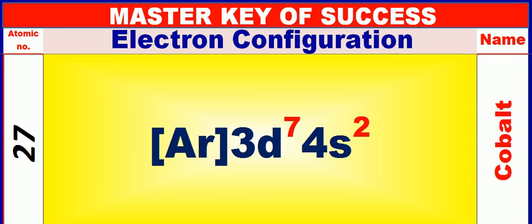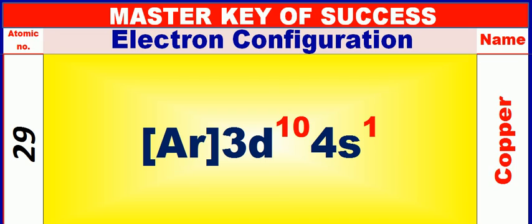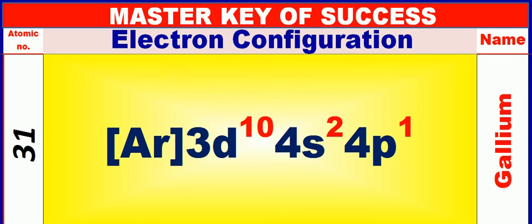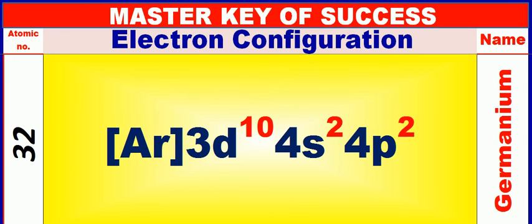Atomic number is 27 and name of atom is Cobalt. Atomic number is 28 and name of atom is Nickel. Atomic number is 29 and name of atom is Copper. Atomic number is 30 and name of atom is Zinc. Atomic number is 31 and name of atom is Gallium. Atomic number is 32 and name of atom is Germanium.